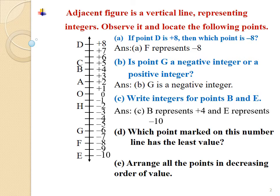Sub-question d: Which point marked on this number line has the least value? We know that at the top of the number line there is the largest value, and at the bottom there is the least value. So we can say that point E has the least value, which is minus 10.